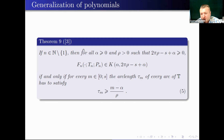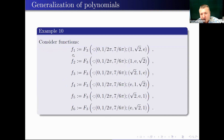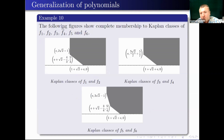Consider Example 10: polynomials of degree three all having zeros in the same places, but with changing powers — specifically permutations of three powers: 1, √2, and e. The following pictures show complete membership to Kaplan classes for functions f1 through f6. Functions f1 and f2 belong to one set of Kaplan classes, f3 and f4 to another, and f5 and f6 to another. As you can see, the powers also change the Kaplan classes.